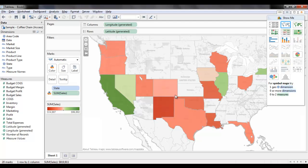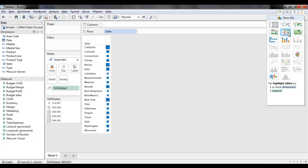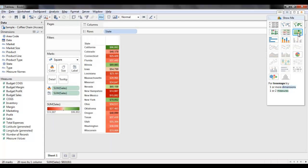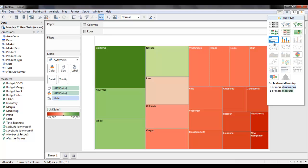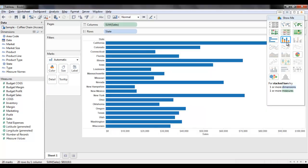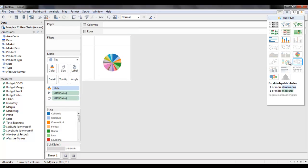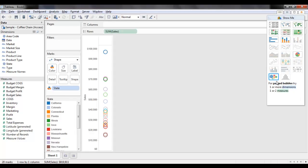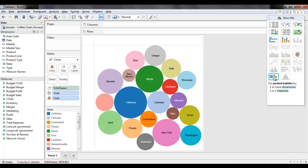Similarly, there are other interesting views like heat maps, highlight tables, tree maps, horizontal bars, stacked bars, pie charts, circle views, and packed bubbles view.